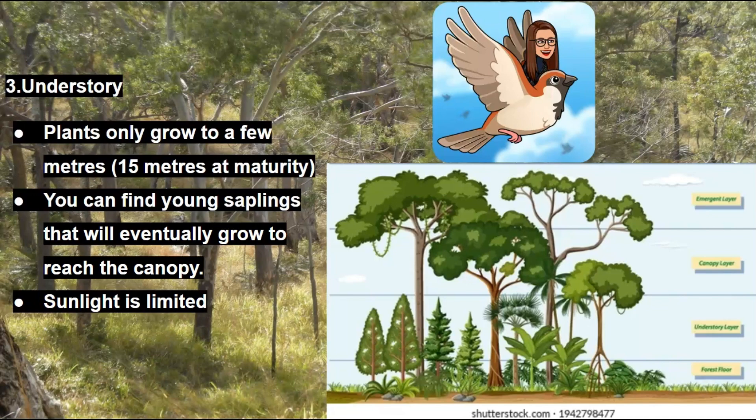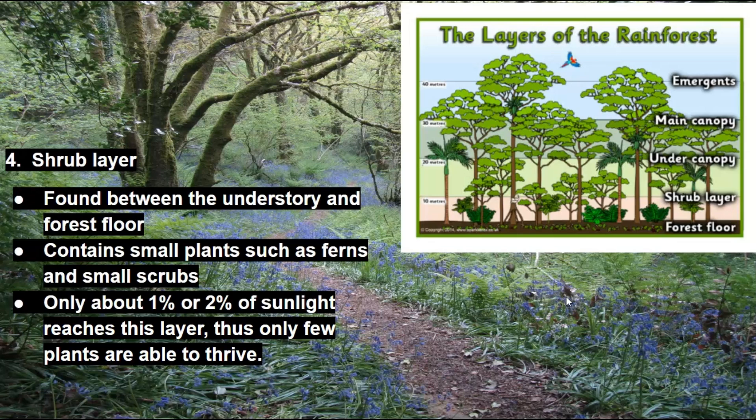After the canopy layer, we have the understory. The understory can only grow to a few meters — about 15 meters at maturity. You can find young saplings here that will eventually grow to reach the canopy; however, sunlight in this layer is very limited. Below the understory, we have the shrub layer, which is formed between the understory and the forest floor. It contains small plants such as ferns and small shrubs, and only about 1 to 2% of sunlight reaches this layer, so only a few plants are able to survive.